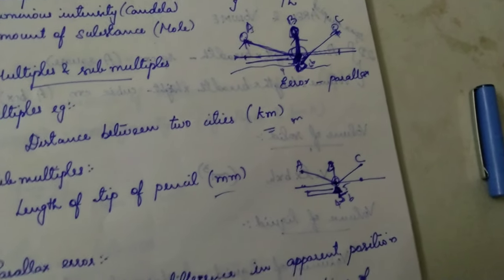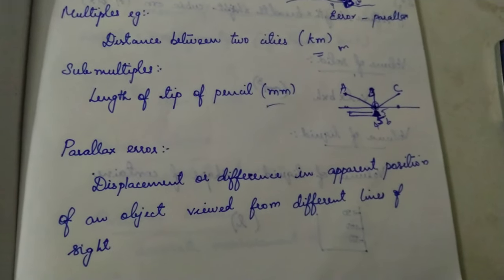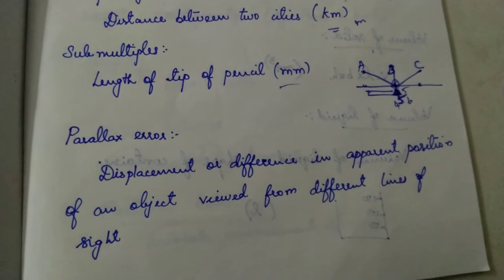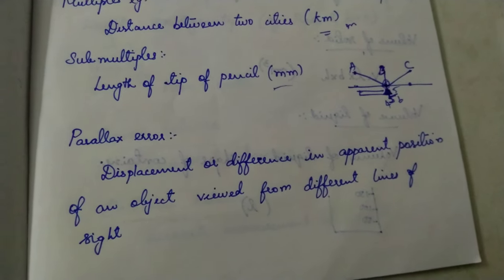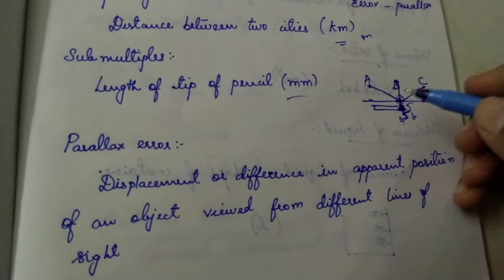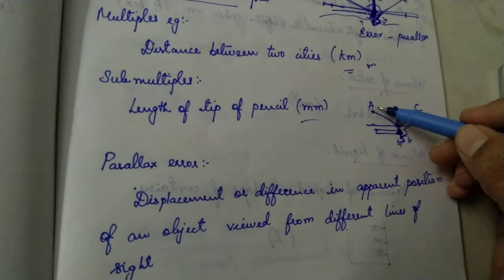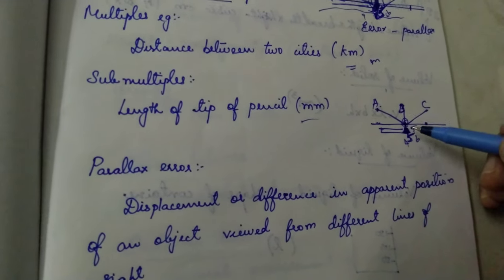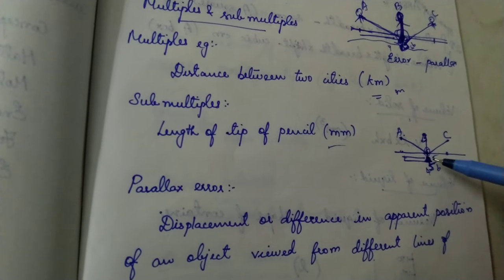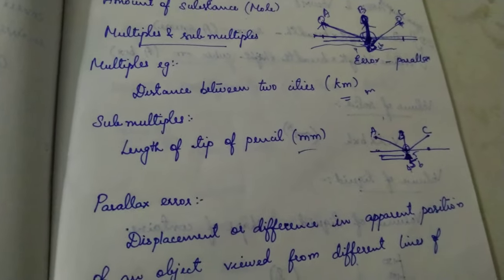The parallax error definition: displacement or difference in the apparent position of an object viewed from different lines of sight. Just think of it as the difference in value caused by the change in position — hence your view also changes, which results in a change in the measured value.